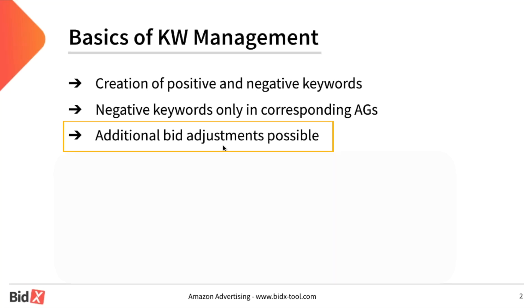Additionally, to the creation of a new keyword there can also be a bid adjustment. Let's assume that you have a very well converting search term in an auto campaign with a better ACoS than your target ACoS. In this case, the keyword management would not only create a new keyword but also increase the bid according to the current CPC in the auto campaign.